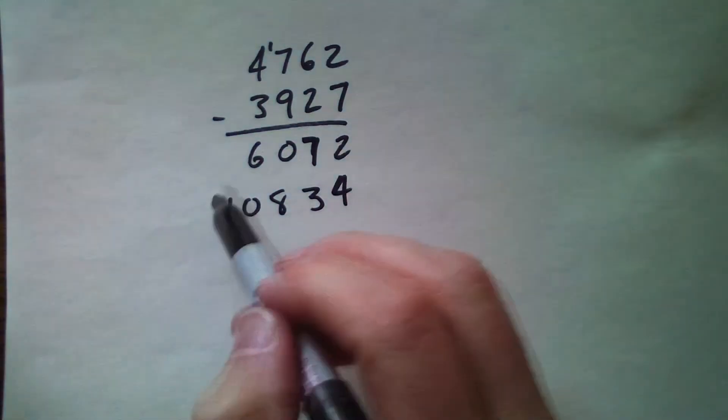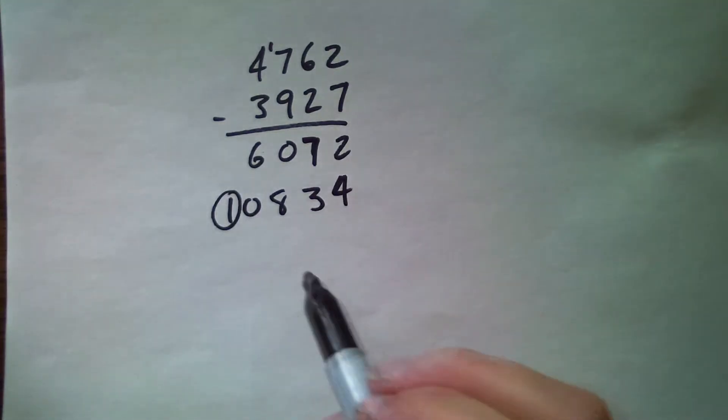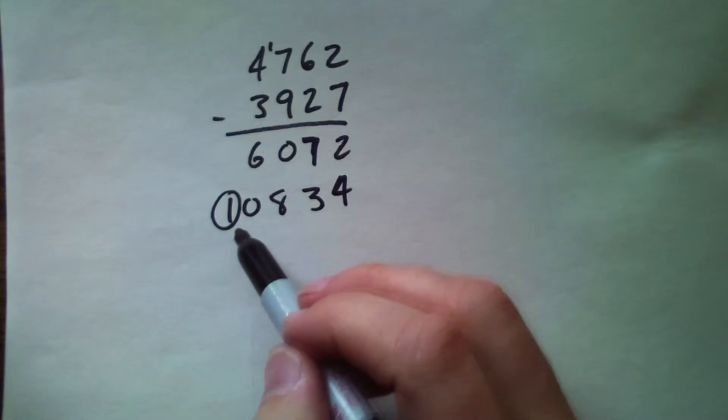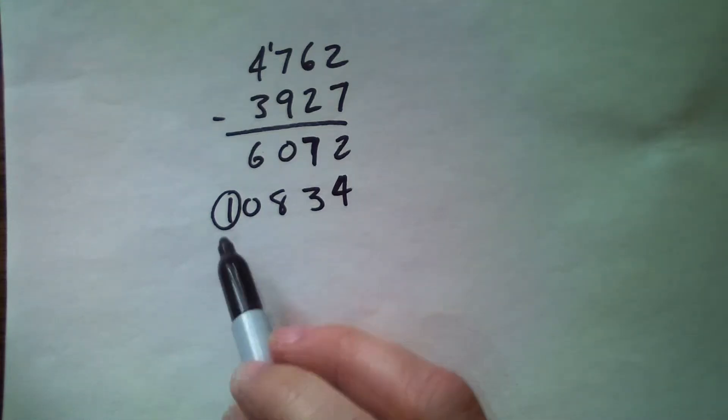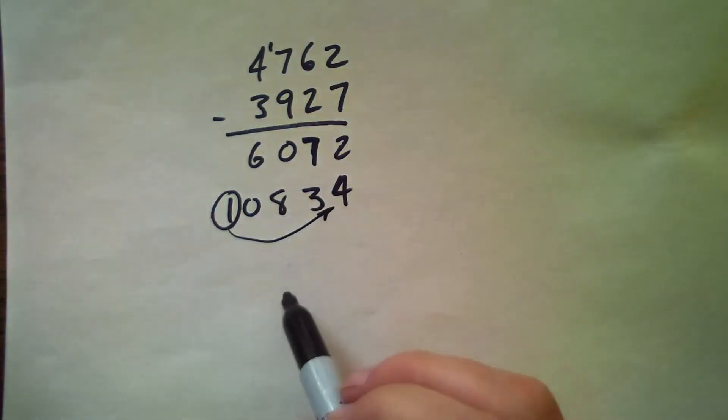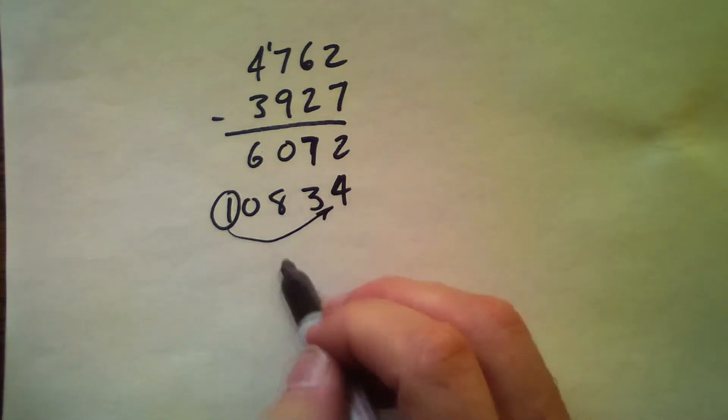All right, so we're almost there, but then the next part is we take this leading one - and there always is a leading one - and you take that one and add it to the ones digit. So the one plus the four gives you a 5, and your answer is 835.